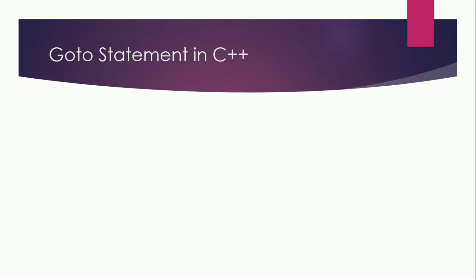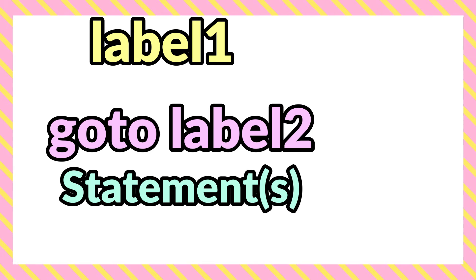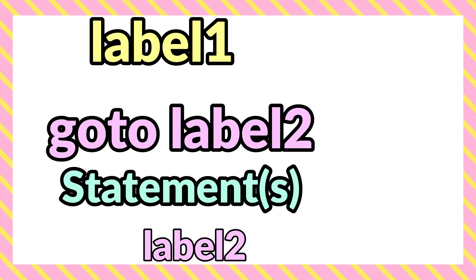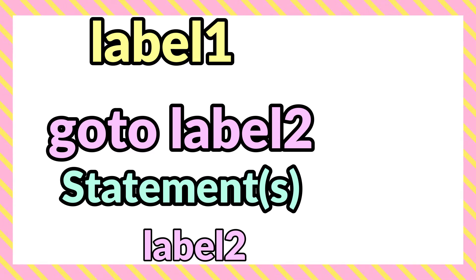Aaj hum C++ language mein goto statement ka use dekhenge - ke hum isko kis tarah use kar sakte hain aur iska benefit kya hai. Goto statement hum use karte hain jab kisi statement se jump karna ho. Maslan, maine ek menu banaya aur uske last mein ek option rakha ke agar aap dobara menu mein jaana chahte hain, toh last mein hum likhenge 'goto' aur uske baad label ka name. Goto control ko usi place par le jaata hai aur wahan se dobara execution start ho jaati hai.